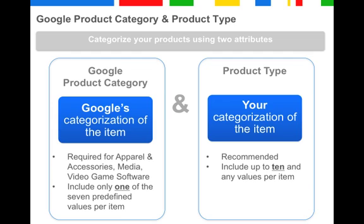You may wonder why the merchant needs both. The short answer is it will help us more accurately and consistently understand an item's product category, which will help us determine which attributes apply to that category.